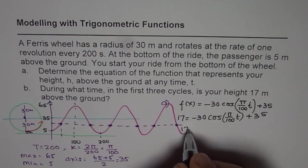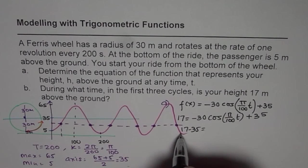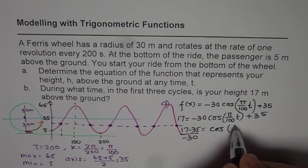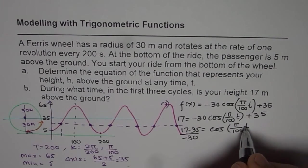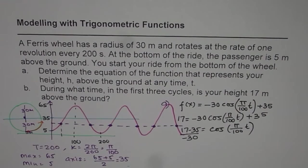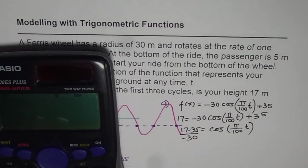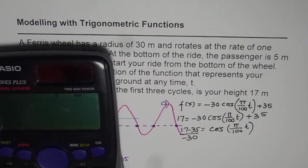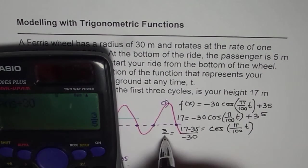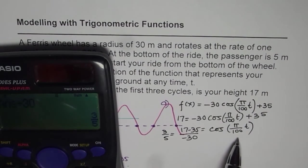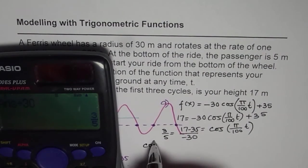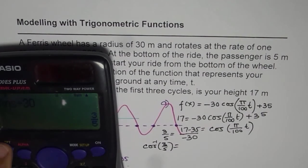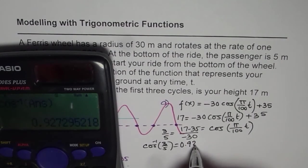Taking 35 to the other side: 17 minus 35 = minus 30 cos(π/100 · t). Dividing both sides by minus 30: (17 − 35) / (−30) = cos(π/100 · t). Note the calculator should be in radians for this calculation — that is very important. So (35 − 17) / 30 = 3/5, which is positive 3/5. To find the angle, we take cos inverse of 3/5. Computing that gives 0.9273 radians.